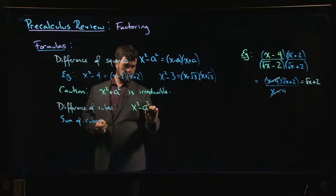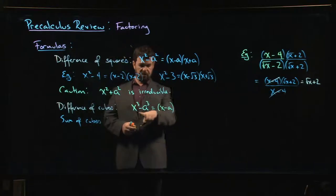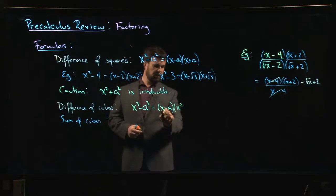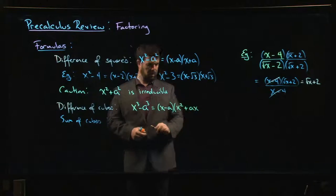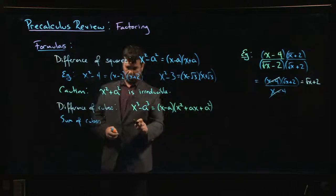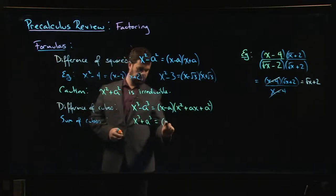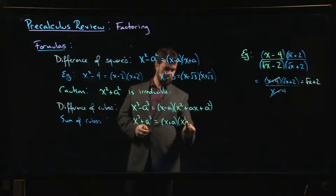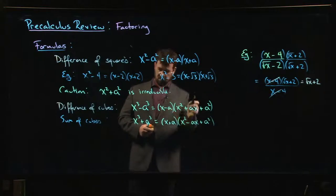So difference of cubes looks like the following: x cubed minus a cubed is x minus a. We know that's a factor because if I put in x equal to a I get zero. And the other term, you square the first term, then you multiply with the opposite sign a times x, and then you square the last term a squared. For sum of cubes, same thing with the sign change. This will be x plus a, now minus a x.